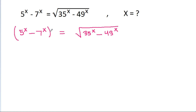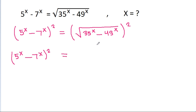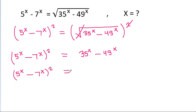If we square both sides, then 5 power x minus 7 power x whole square is equal to 35 power x minus 49 power x, since the square and square root cancel. And 35 power x is 5 power x times 7 power x, while 49 power x is 7 power x times 7 power x.